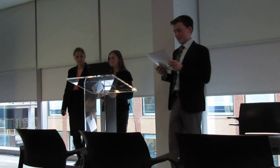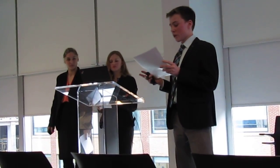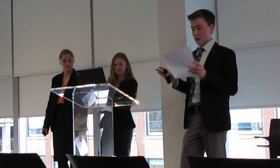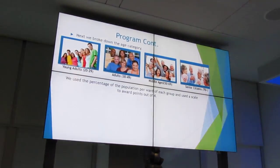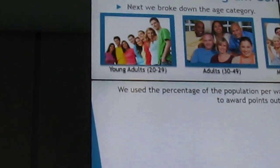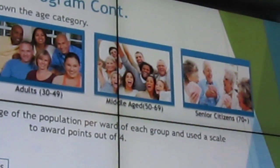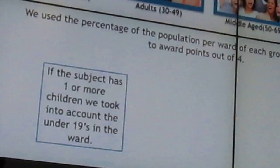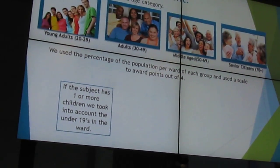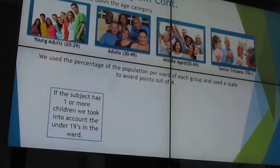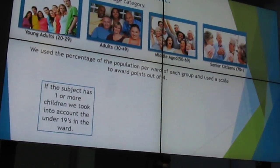We broke down the age category into four divisions: young adults, adults (30 to 49), middle age (50 to 69), and senior citizens (70 plus). We broke down the percentage of the population represented for each group per ward. Points were assigned per ward based on a customized scale for each section, since age group distributions vary across Toronto. For example, for middle age, one point was equal to 10%, and this was capped off at four points.